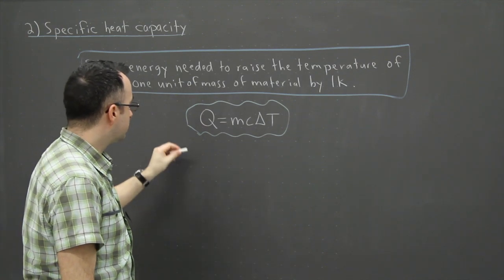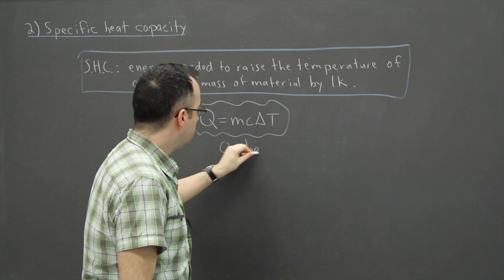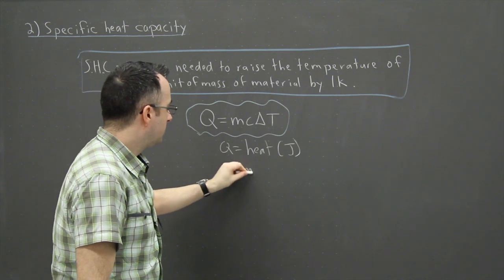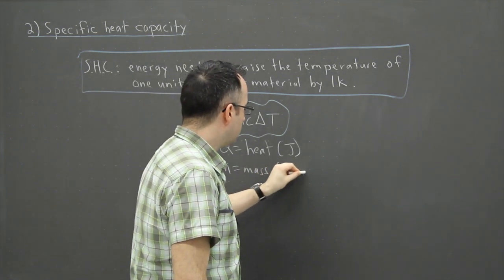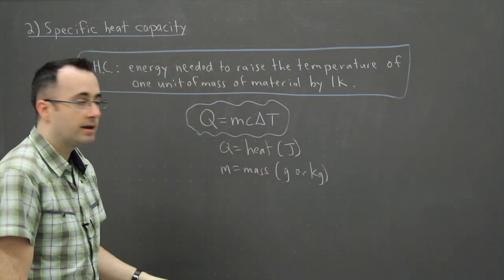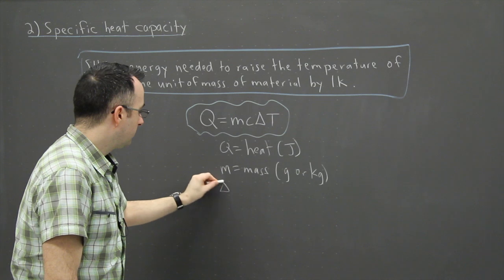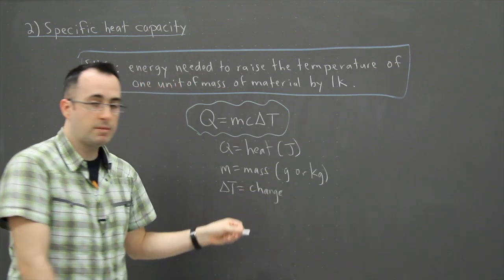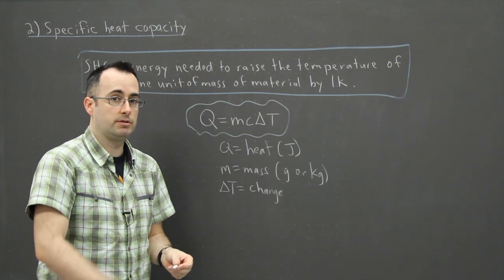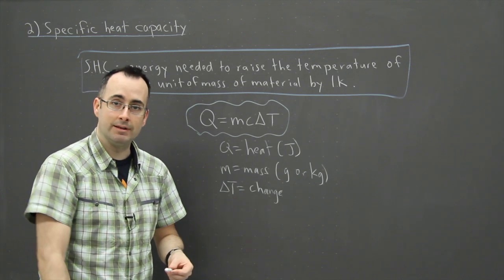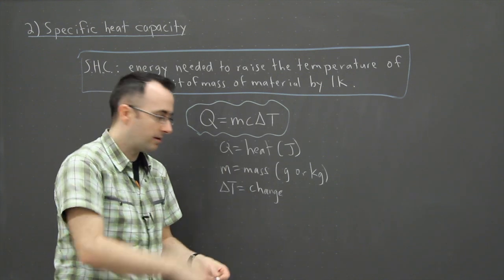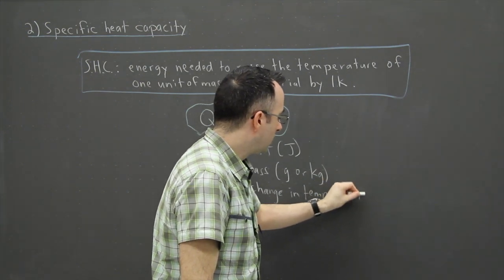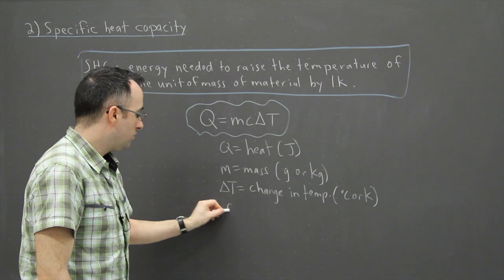Let's define everything. Q equals the heat, which is measured in joules. Then we have m, which is the mass. The mass could be in grams or kilograms—those are the most common things you're going to see. Delta T is going to be a change in temperature. Remember delta in physics, or even in mathematics, is used to denote a change. So if the temperature goes from 5 to 10 degrees, your change in temperature would be 5. So change in temperature—it could be in degrees Celsius or Kelvin. Doesn't matter.